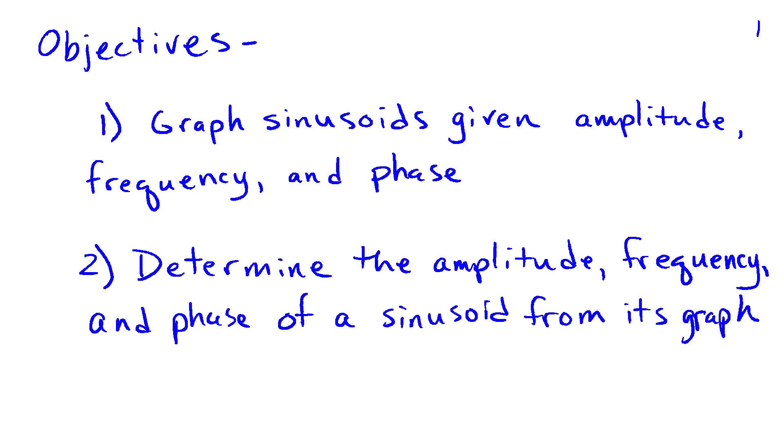One of the reasons sinusoids are so powerful in signal processing is because they can be used as building blocks to construct or analyze more complicated signals. In order to do that effectively, we need to understand how the parameters of the sinusoid — the amplitude, frequency, and phase — affect the sinusoid. The objectives are to be able to graph sinusoids given the amplitude, frequency, and phase, and to determine the amplitude, frequency, and phase of a sinusoid given its graph.